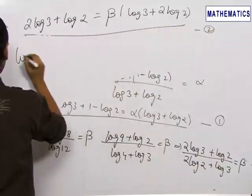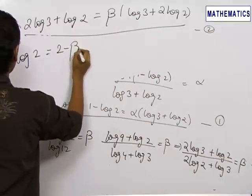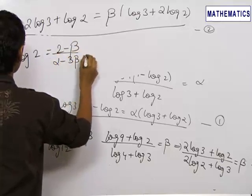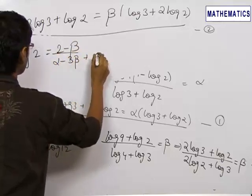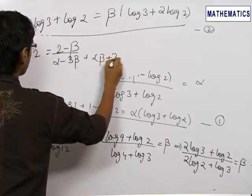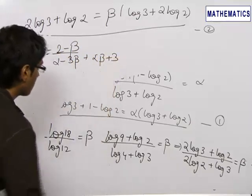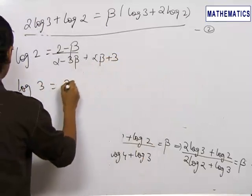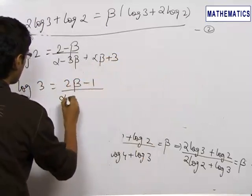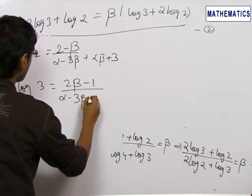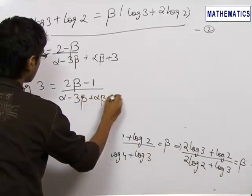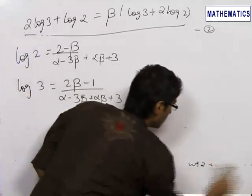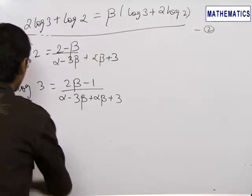Simplifying the first and second equations together, we get the value of log 2 equal to (2 minus beta) upon (alpha minus 3 beta + alpha*beta + 3), and the value of log 3 equal to (2 beta minus 1) upon (alpha minus 3 beta + alpha*beta + 3).